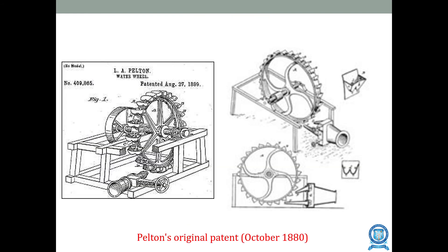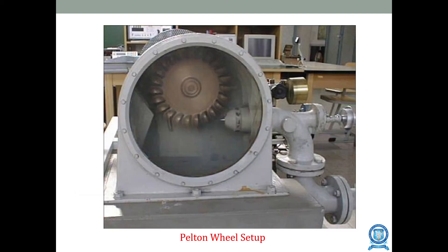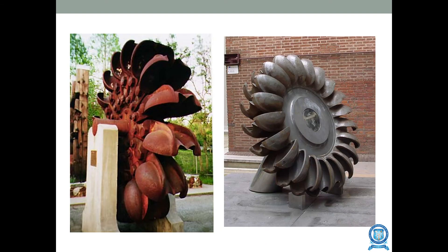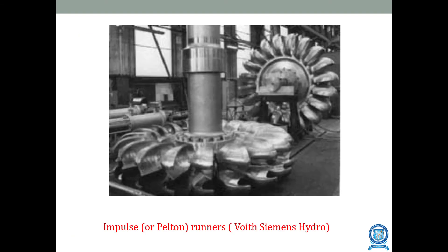Pelton's original patent was obtained in October 1880. You can see the diagram of the Pelton wheel setup and the impulse Pelton runners.